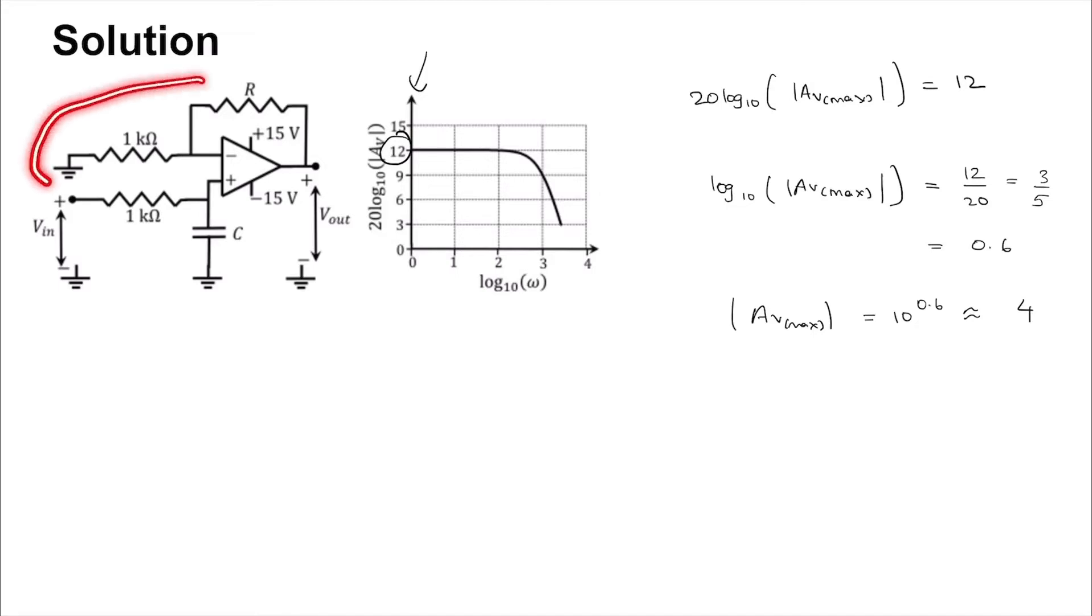Now, since this is just a non-inverting amplifier circuit whose positive input is coming from a low pass filter, what we can say is that the maximum gain will be at DC when this capacitor is just open. So that value will be 1 plus RF by R1, where this is RF and this is R1.